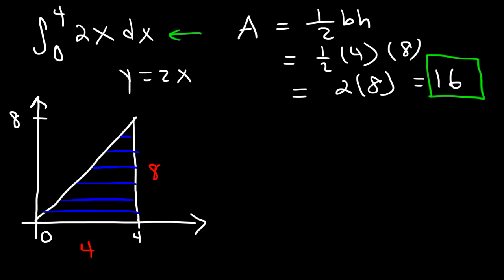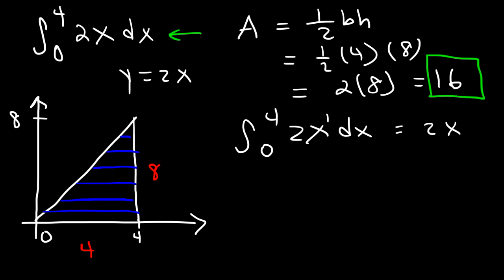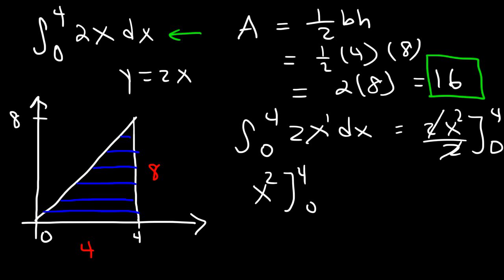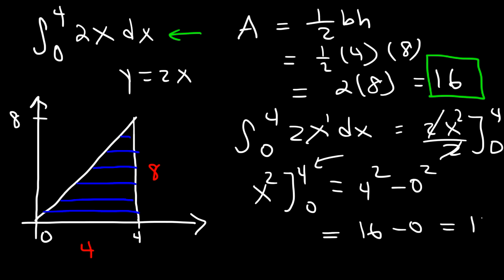Now let's go ahead and evaluate the definite integral to see if we get the same answer. The antiderivative of x is x squared divided by 2, evaluated from 0 to 4. 2 divided by 2 is 1, so that cancels. Plugging in the upper limit first, it's going to be 4 squared, and for the lower limit, minus 0 squared. 4 squared is 16, and 16 minus 0 is 16. So as you can see, the answer is indeed the same.